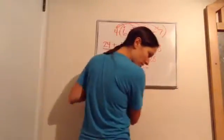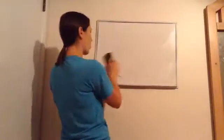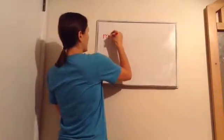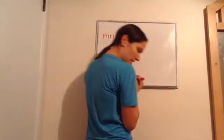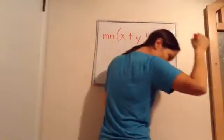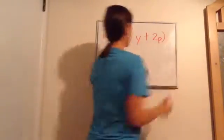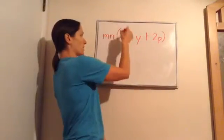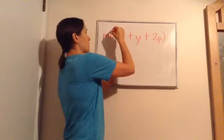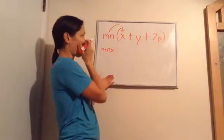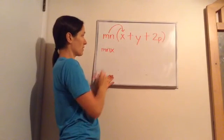Now we're going to add letters. It doesn't get any harder — it just looks harder. MN times the quantity x plus y plus 2p. Stay with me — you're just multiplying each other, and all that means is mix them together. MN times x looks like MNx. That's it. MN times x.